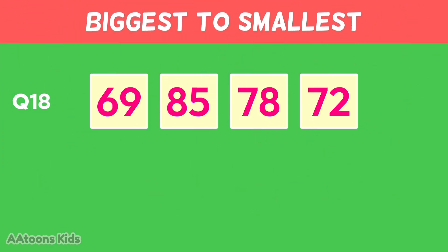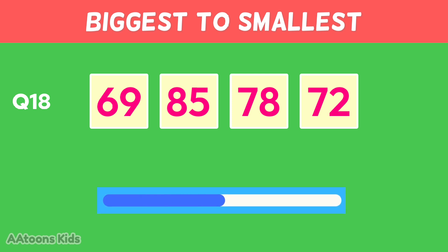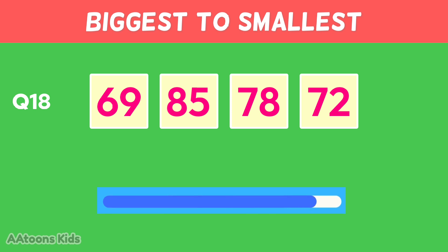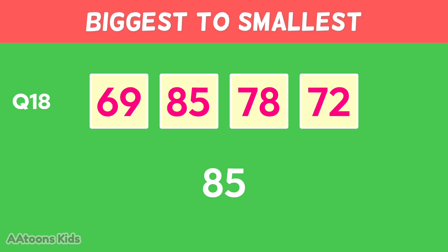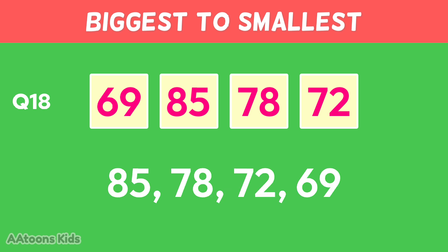Arrange these numbers from biggest to smallest: eighty-five, seventy-eight, seventy-two, sixty-nine.